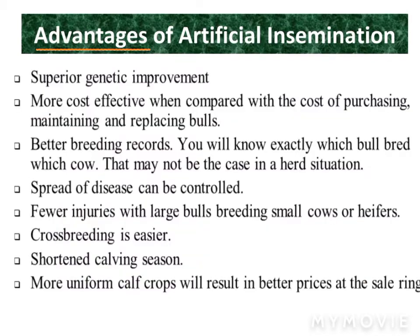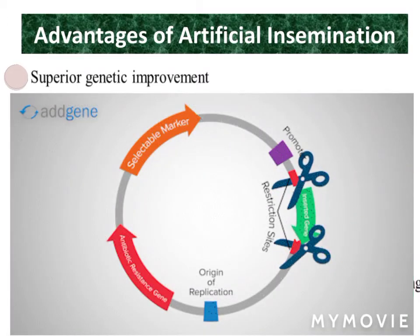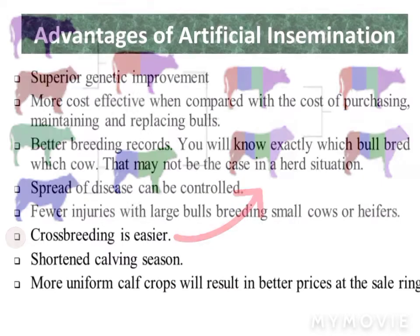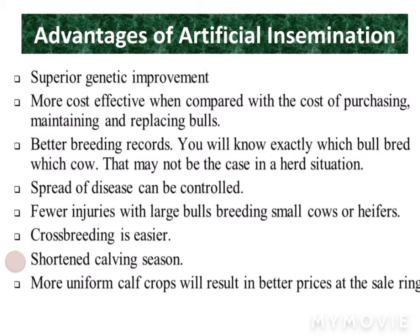Advantages of artificial insemination include: superior genetic improvement, more cost-effective than purchasing, maintaining, and replacing bulls, better breeding records than herd situations, low chances of diseases and injuries, easier cross-breeding, shortened calving season, and more uniform calf crops resulting in better prices.